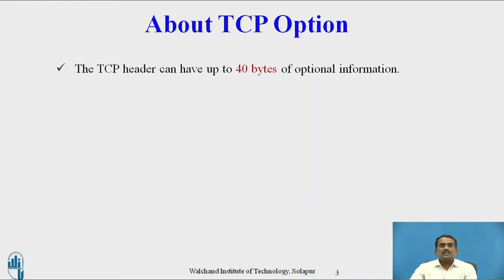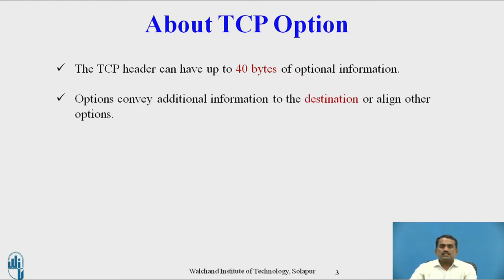About TCP option: in the previous video we discussed the different parts of the TCP protocol. Option is an extra field available to the user to add any extra information to that particular packet, used in the TCP protocol packet format and the datagram used in UDP. The TCP header can have up to 40 bytes of optional information — extra space available to the user to add information.